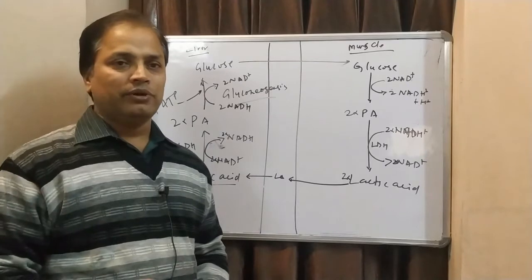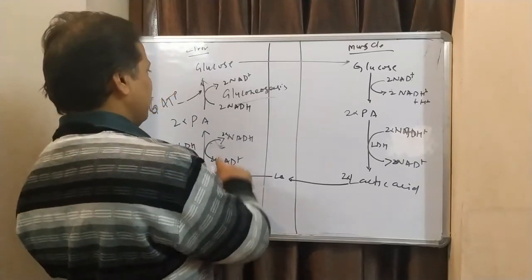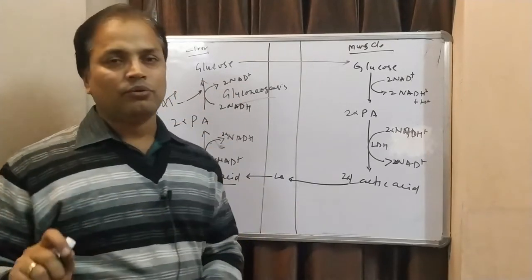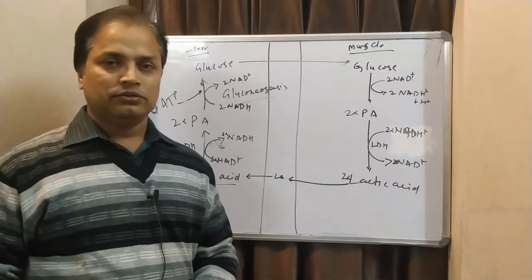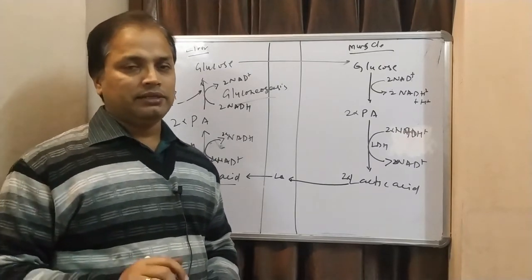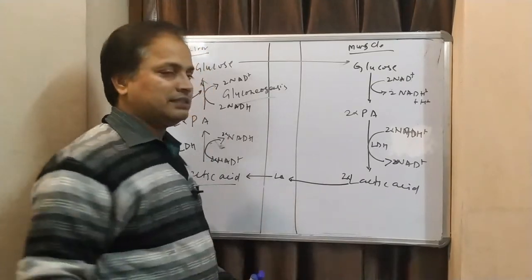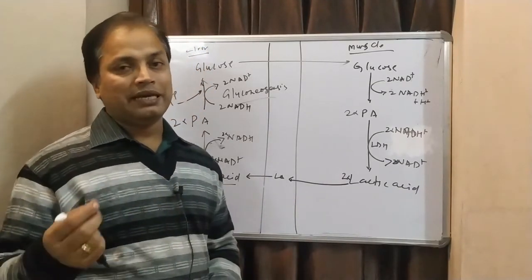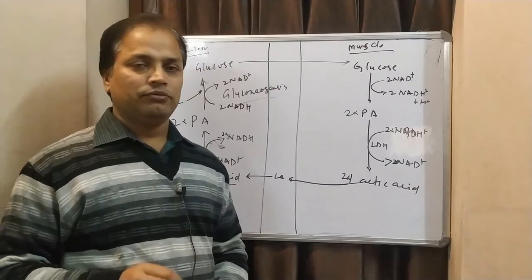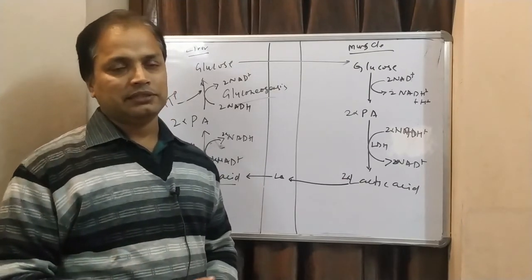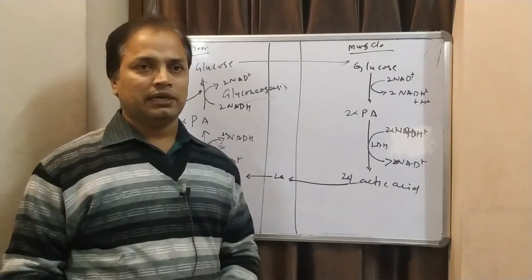So, this is called as Cori cycle, where lactic acid will be used for glucose production. This is Cori cycle and it is having a significance that it utilizes our lactic acid which is produced during anaerobic respiration where oxygen will not be there. That is the significance of this Cori cycle.